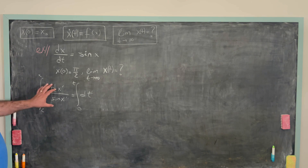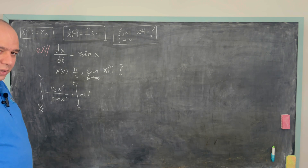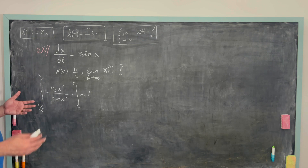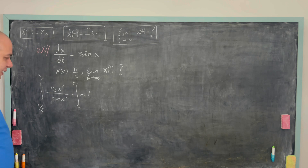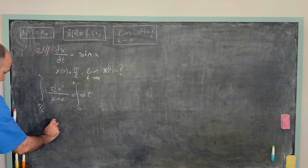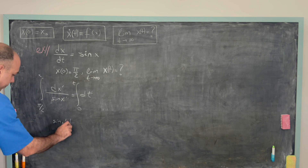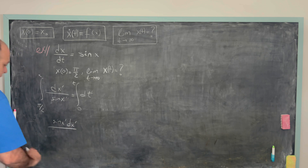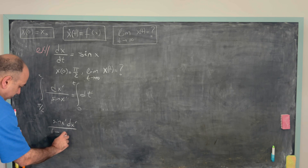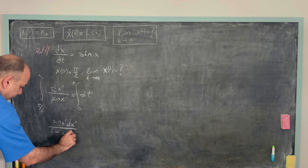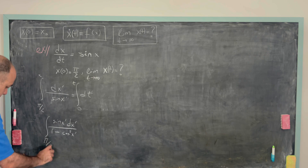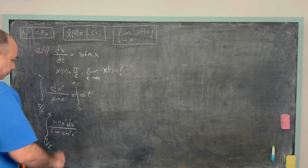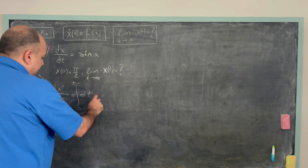The integrand 1/sin x is nothing but cosecant x. To compute the integral of cosecant, we multiply by sin x' over sin x', giving sin x' dx' over sin²x'. Since sin²x' = 1 - cos²x', the left-hand integral runs from π/2 to x. The right-hand side simply equals t.